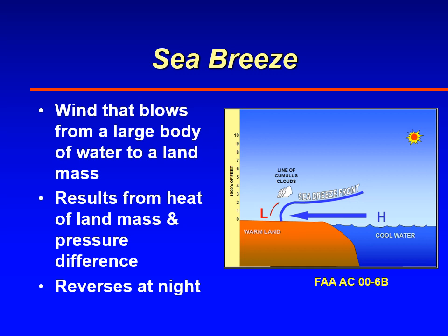Sea breezes are winds that blow from a large body of water to the land mass. This typically results from the land heating up, creating lower pressure over land and higher pressure over the water, causing wind to move in from the sea towards the land. This is where you see the development of cumulus clouds and even thunderstorms — very common in Florida during the summertime and also around the Great Lakes. This flow reverses at night because the land gets colder while the water stays warmer.